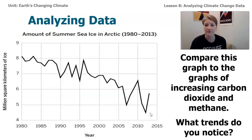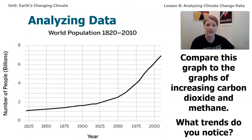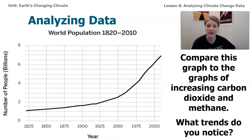Another thing we looked at in the sim was the number of people on our planet. When the population increased in the simulation, carbon dioxide and methane also changed. As carbon dioxide and methane have been increasing, the number of people has been increasing. However, we found that even if population increases, if humans decrease the amount of combustion or livestock they're consuming, that can also make a difference.